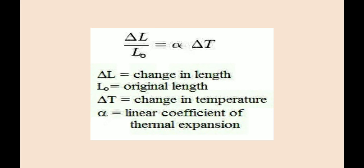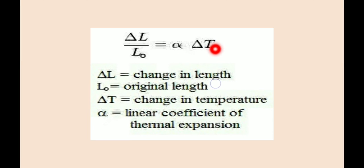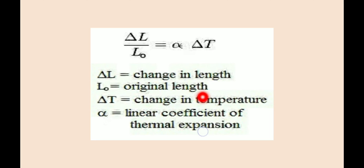Comparing and rearranging the previous expression, I have brought L₀ from one side of the equal sign to the other, giving: ΔL divided by L₀ equals α times ΔT. Here ΔL is the change in length, L₀ is the original length at 0°C, ΔT is the change in temperature, and α is the coefficient of linear expansion.